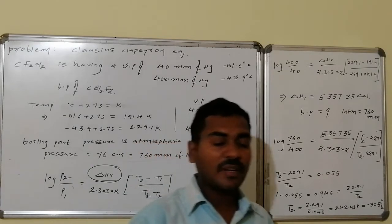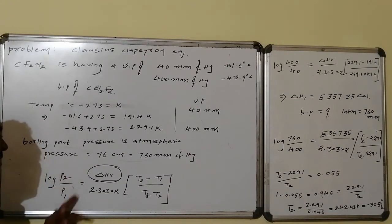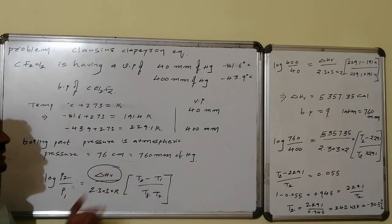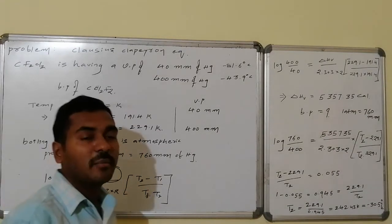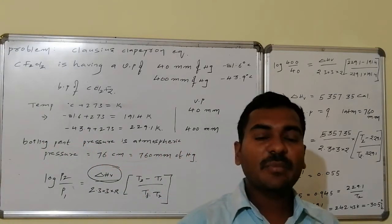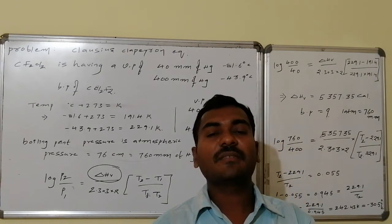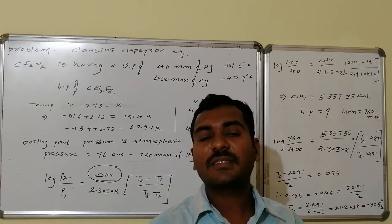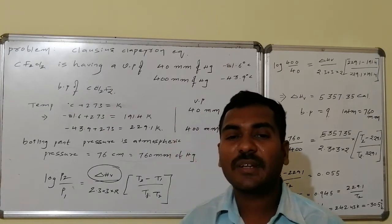With the help of the Clausius-Clapeyron equation, one may be asked to calculate vapor pressure under different conditions, or given all other values, to find temperature. You can also be asked to calculate the boiling point or the ΔH of vaporization. These quantities — vapor pressure, temperature, and latent heat of vaporization — are all interrelated through this equation.